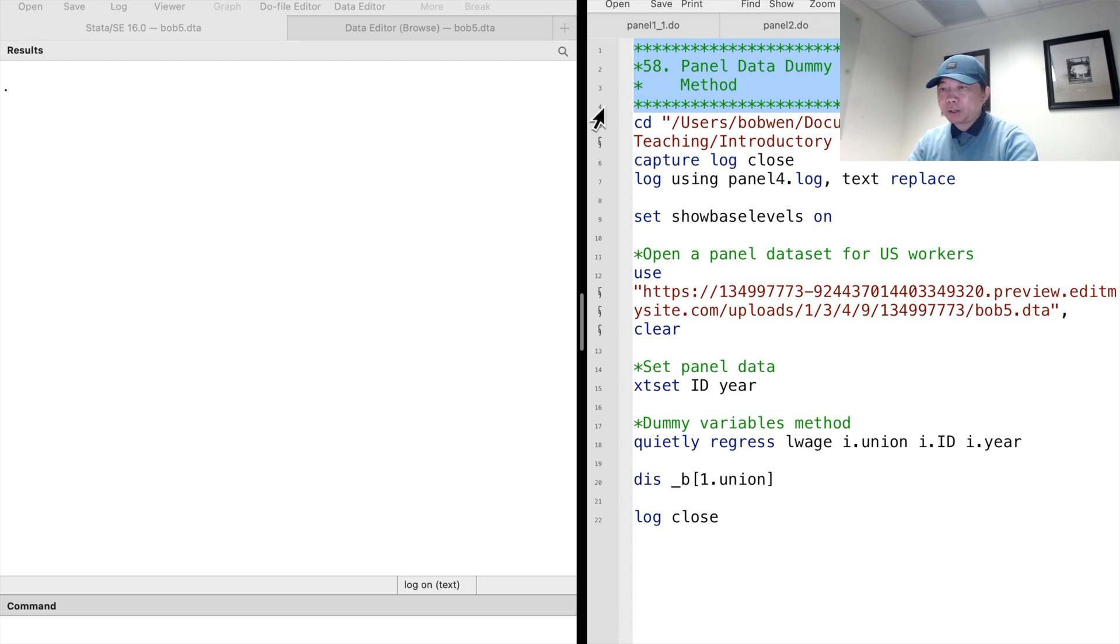The structure allows us to use more advanced methods to estimate panel data models than the standard OLS. In the panel data context, we can make more complicated assumptions about the error term.